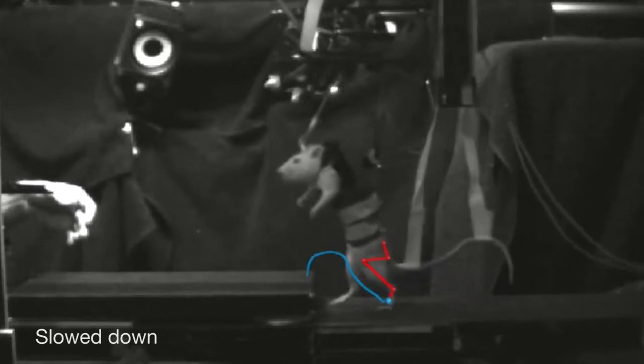We have been able to restore natural walking behavior in completely paralyzed rats by delivering specifically designed electrical stimulation to the spinal cord.